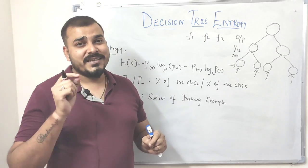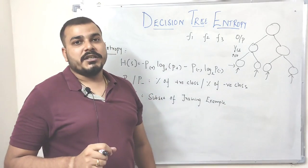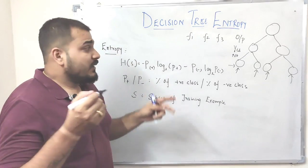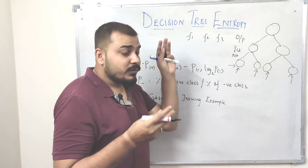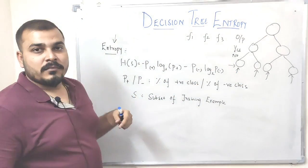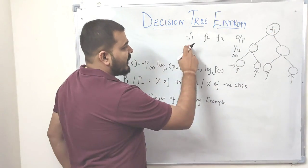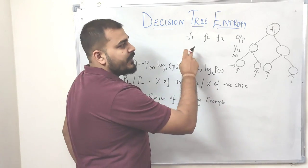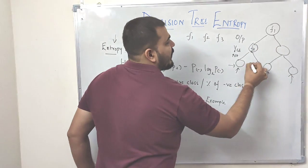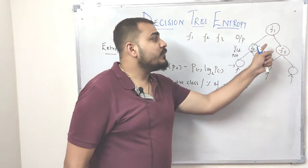The ID3 algorithm basically says that the first step is to select the right attribute for the splitting of the decision tree — which is the first feature that I should consider as the root node. So in order to determine which feature to use for splitting the nodes, we have to use this entropy technique. We should understand how to select the right attribute.